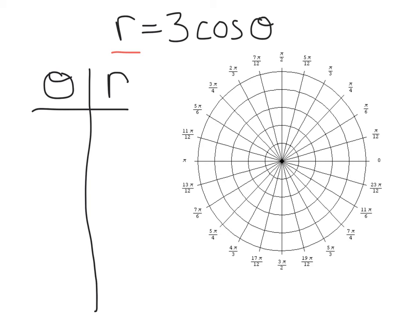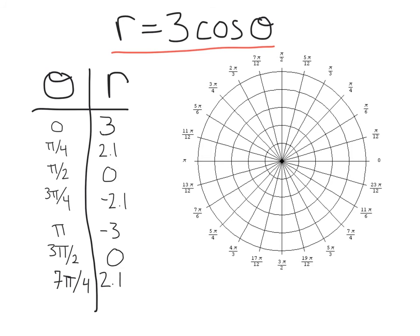Let's kick things off with r equals 3 cosine theta. We're going to do this by plotting points. Now instead of an xy chart, since we're using the polar coordinate system, we're going to use a theta-r chart, where theta is the angle and r is the radius. I've gone ahead and put some values into our chart — I picked different radian values along the polar graph and plugged those in to find the corresponding radius.